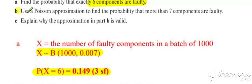Part B, use a Poisson approximation, find the probability that more than seven components are faulty. So to use our Poisson approximation, you do n times p to get your lambda value, so that's equal to seven.